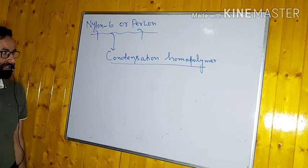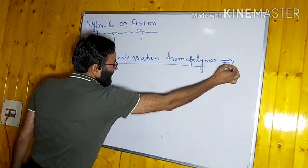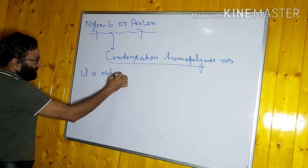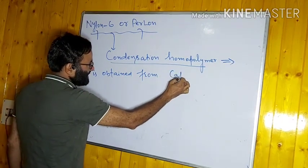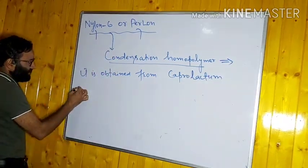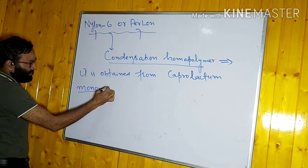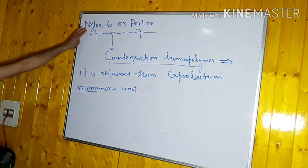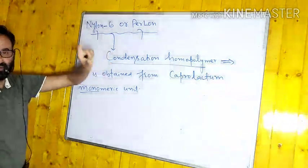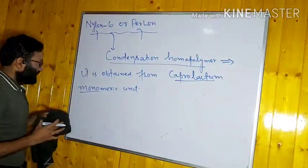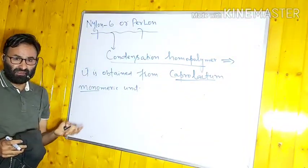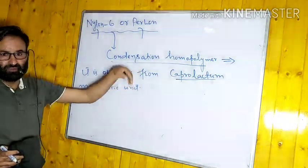Nylon 6 is a condensation homopolymer. It is obtained from a single monomeric unit, which is caprolactam. So the key points to remember are: in America it is called nylon 6, in Germany it is called Perlon; it is a condensation homopolymer obtained from caprolactam. Now we will see what caprolactam is and how it is synthesized.